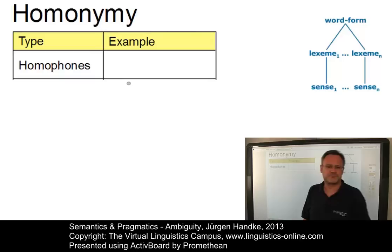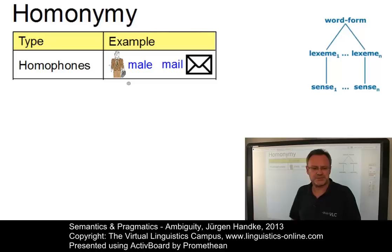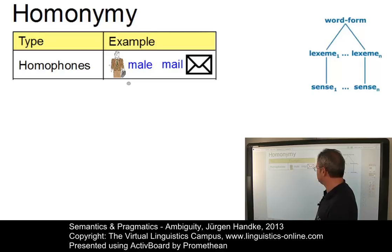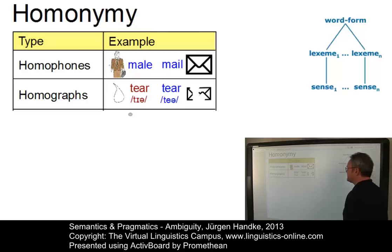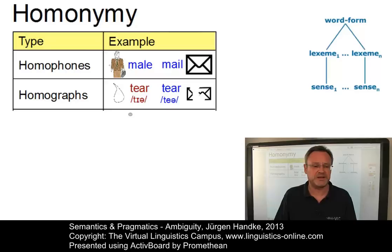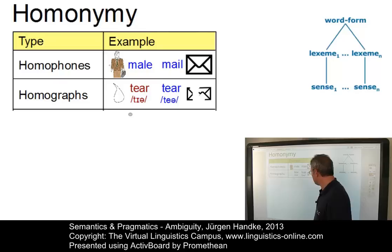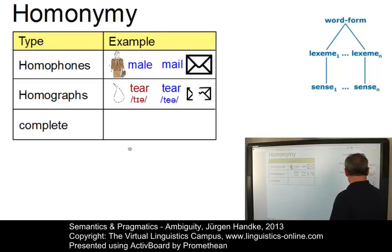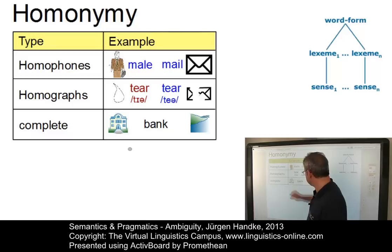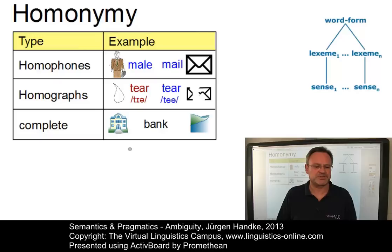Let's look at these phenomena in detail. We may have homophones, which have the same pronunciation but different spellings, as in 'male,' the human attribute, or 'mail,' the mail you send around. Homographs, by contrast, are homonyms which are written in the same way — they have the same spelling but different pronunciations, as in 'tear,' the teardrop, or 'tear' if you tear something apart. And then we may have complete homonyms, such as 'bank,' where you have the money institute and the river embankment — same spelling, same pronunciation.